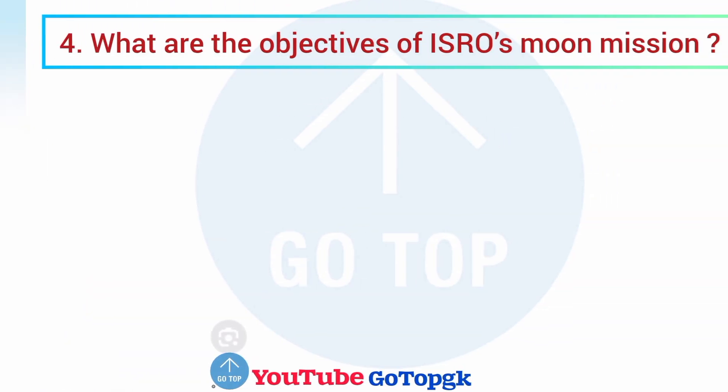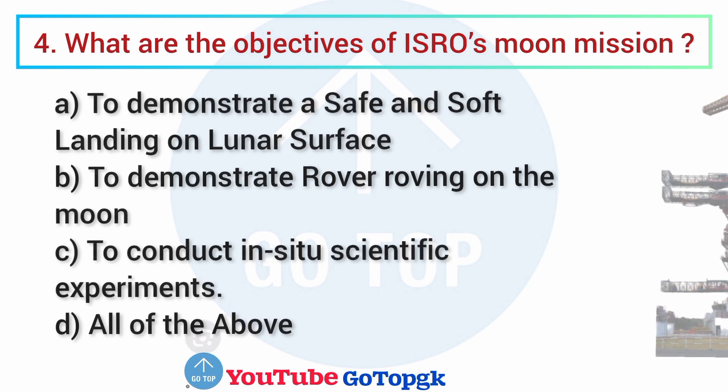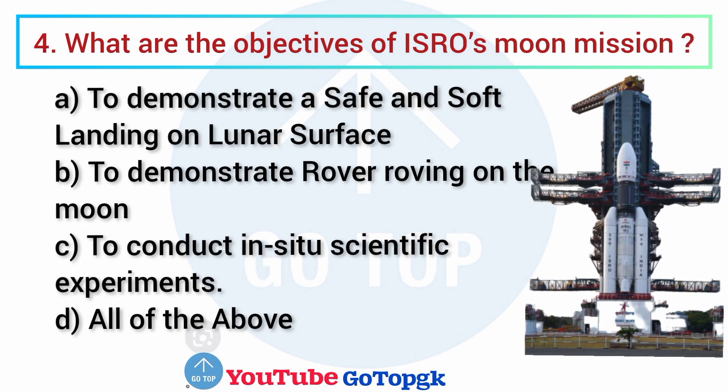Question No. 4. What are the objectives of ISRO's Moon Mission? Options: A. To demonstrate a safe and soft landing on lunar surface, B. To demonstrate rover roving on the moon, C. To conduct in-situ scientific experiments, D. All of the above. Your correct answer is option D: All of the above.